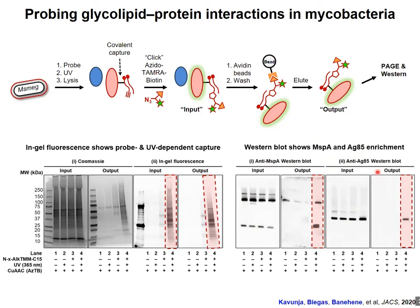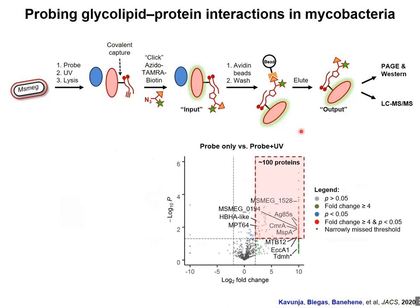We then performed whole-proteome label-free quantitative proteomics on the enriched samples and identified around 100 proteins significantly enriched in the probe-treated, UV-exposed condition versus the unexposed control. We're seeing relevant proteins including our validation proteins — MSPA porin and multiple mycolyltransferases — as well as proteins with known mycomembrane synthesis, remodeling, and transport functions, plus uncharacterized proteins of high interest. We're excited to take this probe and do similar experiments in Mycobacterium tuberculosis as a next step.